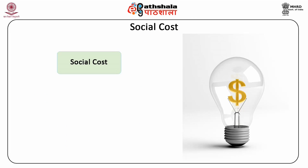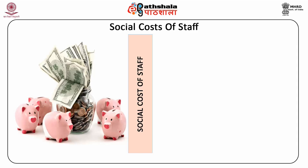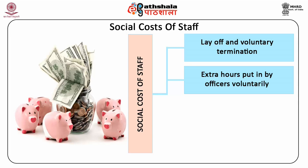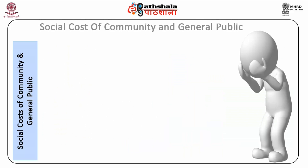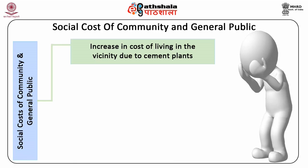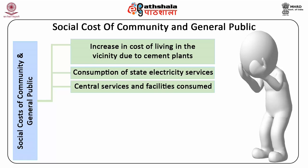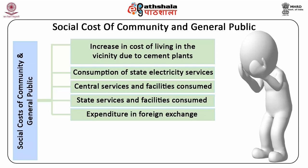Social cost may be divided into two broad categories: social cost of staff, and social cost of community and general public. Social cost of staff includes layoff and voluntary termination, extra hours put in by officers voluntarily, work-related injuries, and undesired attitude formation. Social cost of community and general public includes increase in cost of living in the vicinity due to cement plants, consumption of state electricity services, central and state services and facilities consumed, expenditure in foreign exchange, environmental damage, and product shortcomings.